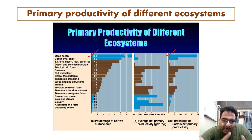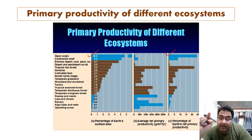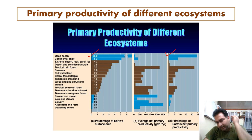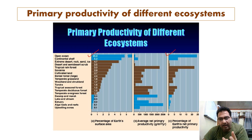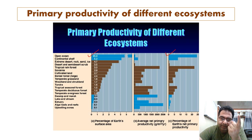When comparing ecosystem productivity in grams per square meter per year, oceans cover the largest surface area of the earth but show very low average net primary productivity per unit area.